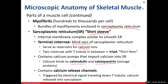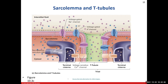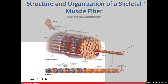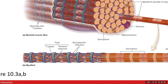Intermixed with the terminal cisterna is the T-tubule. The triad is a configuration of two terminal cisternae with one T-tubule sandwiched in between. Here's our sarcoplasmic reticulum tubular network. At the very end of the sarcoplasmic reticulum are the terminal cisternae — two blue tubes with the green T-tubule sandwiched between them. The T-tubule is sandwiched between two terminal cisternae — we refer to that configuration as the triad.